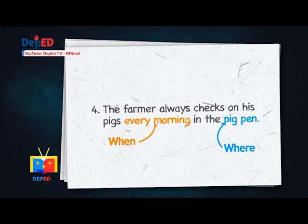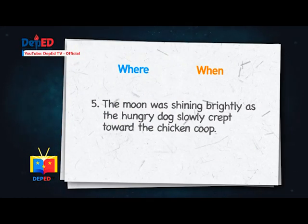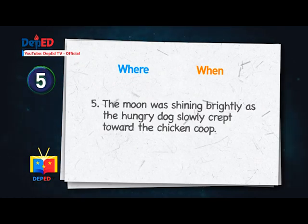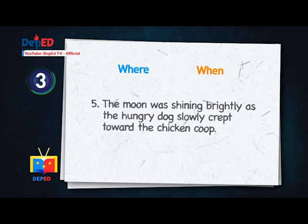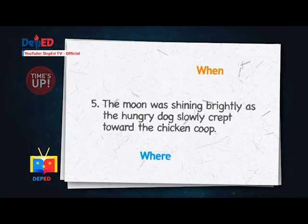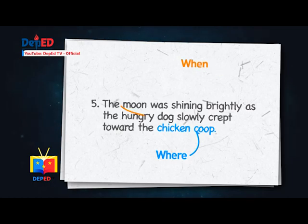Number five: The moon was shining brightly as the hungry dog slowly crept toward the chicken coop. Where? Chicken coop. When? Night.